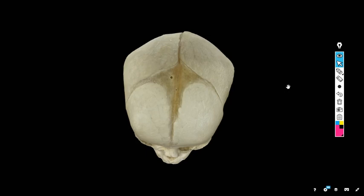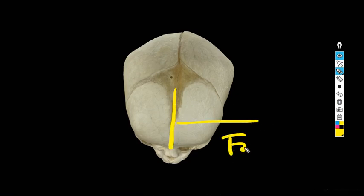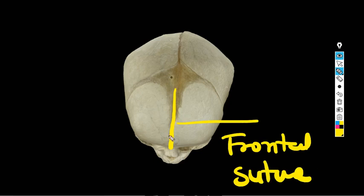My friends, this suture in the yellow color I am showing you is the frontal suture between the two frontal bones. This suture in pink color going posteriorly is called the sagittal suture between two parietal bones.